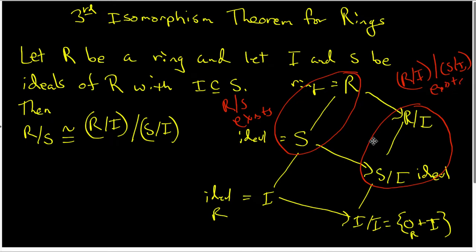What the third isomorphism theorem says is that the quotient structure on this side of our diagram and the quotient structure on the other side of our diagram are actually isomorphic to each other. In order to prove the third isomorphism theorem, there are a couple of different ways of doing it, and the way I want to do it uses the first isomorphism theorem.